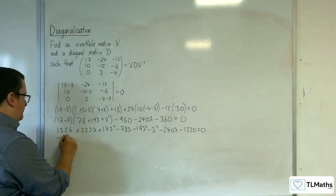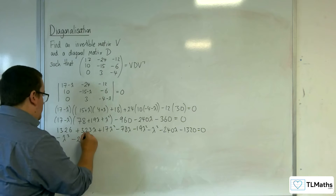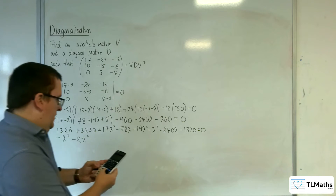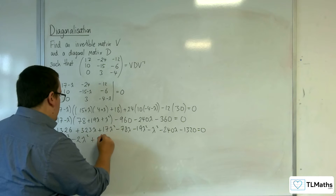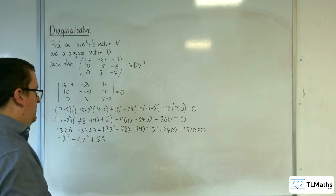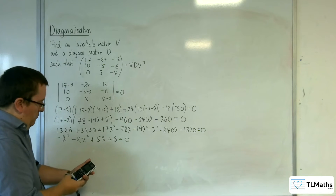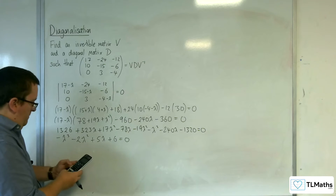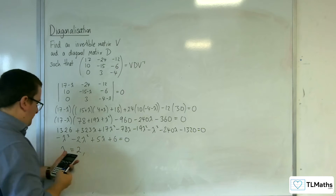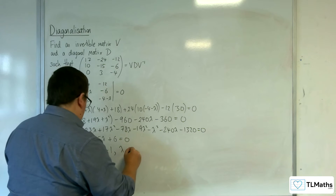So we've got minus lambda cubed, we've got 17 lambda squared take away 19 lambda squared, so take away 2 lambda squared. We've got 323 lambda, take away 78, take away 240, so that's plus 5 lambda. And then we've got 1326 take away 1320, so that's just plus 6, equals 0. This has simplified down quite nicely. Putting that into my cubic solver: minus 1, minus 2, 5, 6 — and we get lambda 1 is 2, lambda 2 is minus 1, and lambda 3 is minus 3.